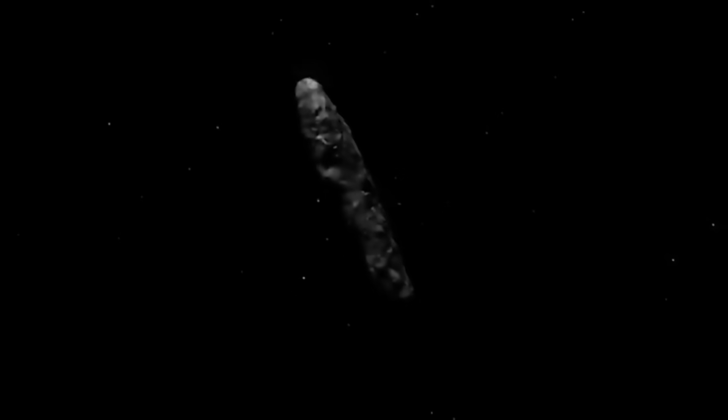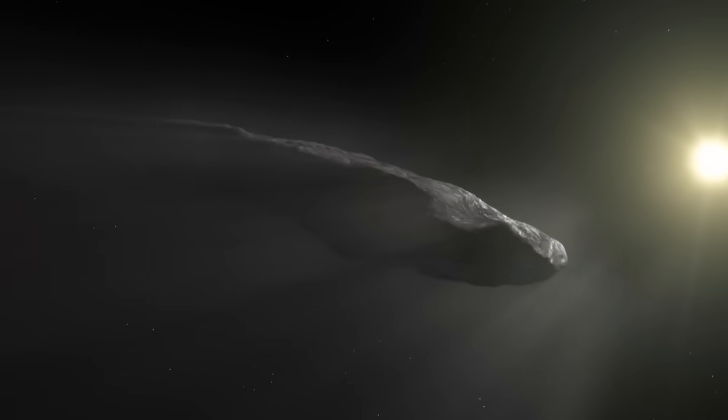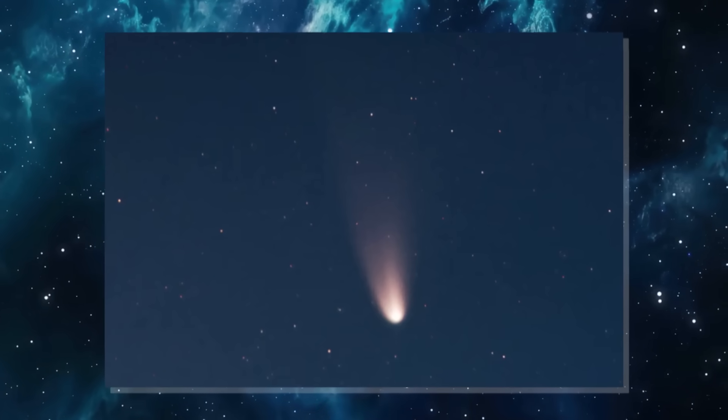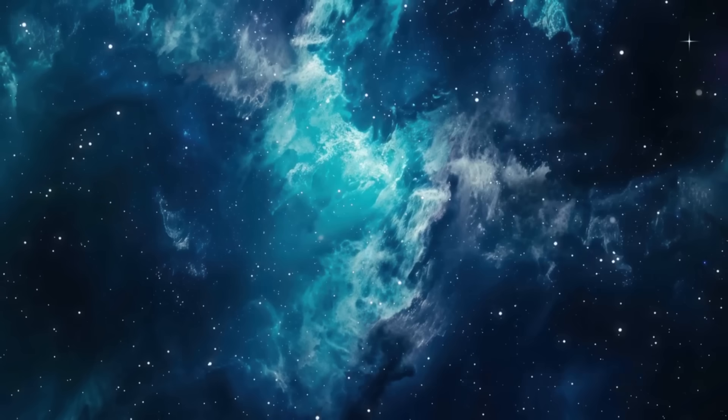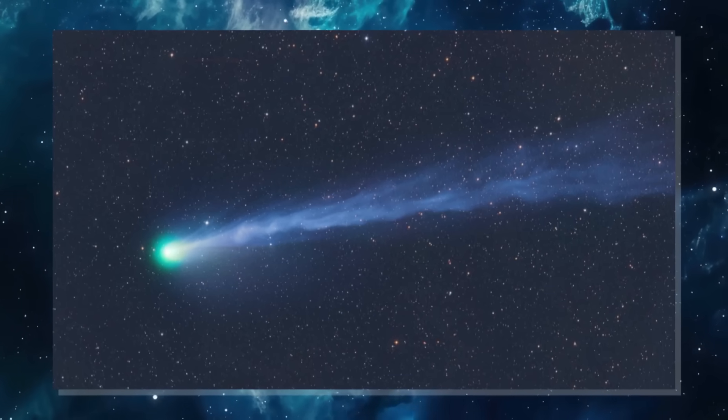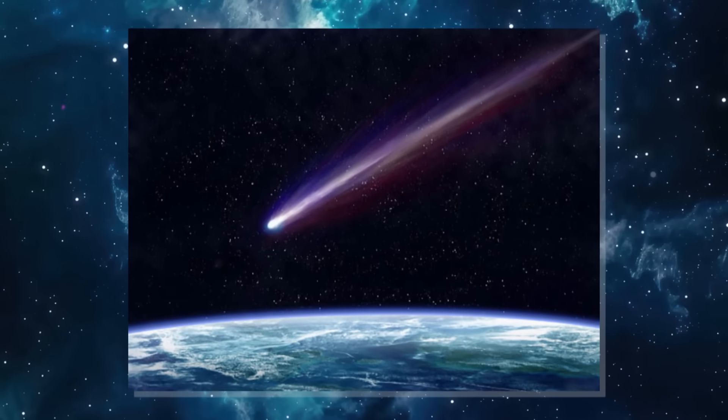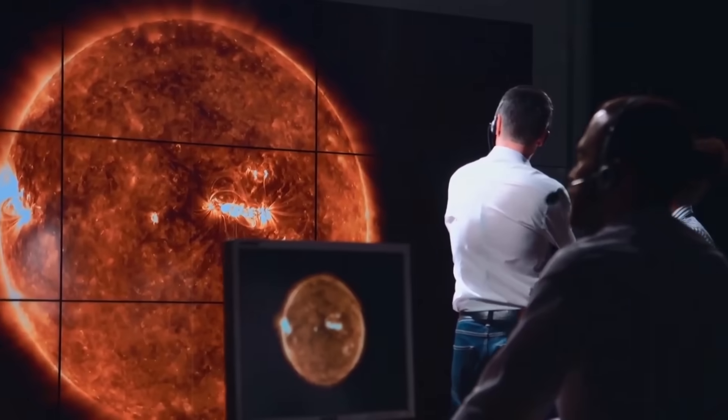First came Oumuamua, silent, dark, and fast-moving, as though it were simply observing. Then came 3I Atlas, its behavior far more active, perhaps gathering detailed data or even testing its environment. And now SWNR2, a vast and heavily powered craft that feels less like a scout and more like a command ship. If this is indeed a sequence, then we may be living through first contact, not in the way science fiction promised us, with greetings and landings, but in the form of an audit.